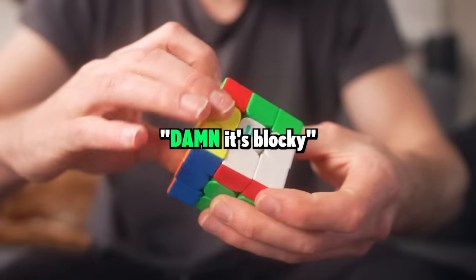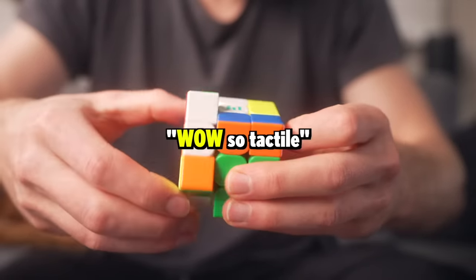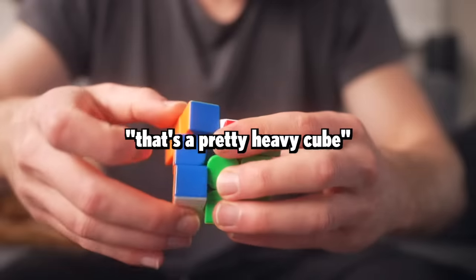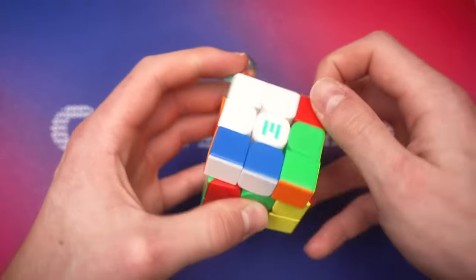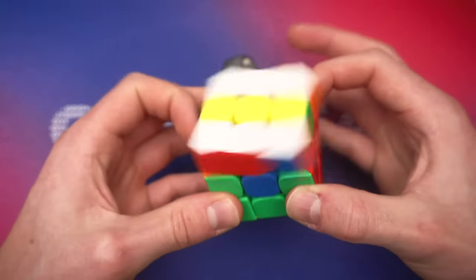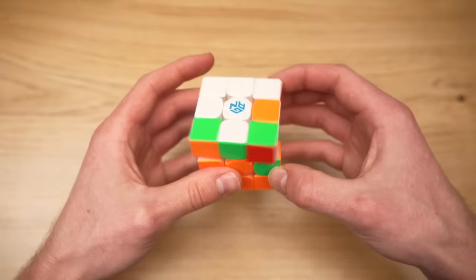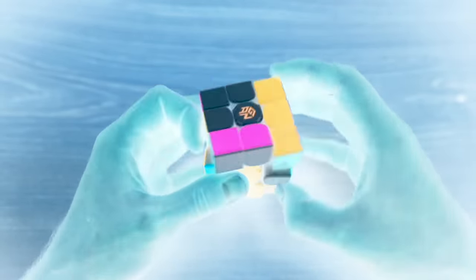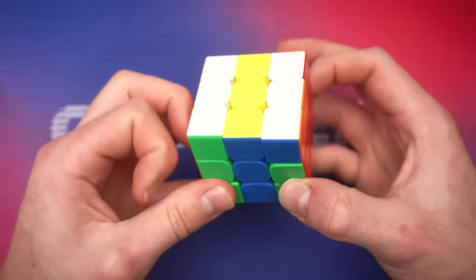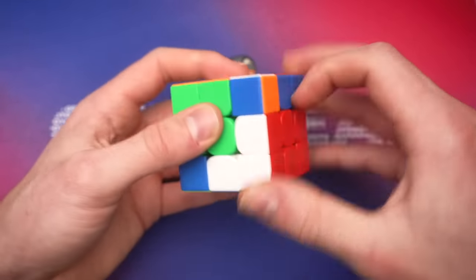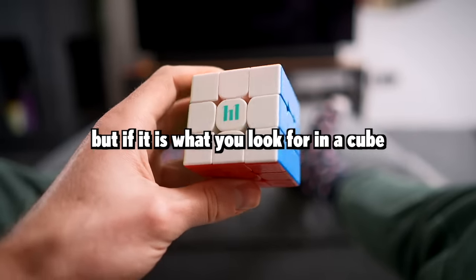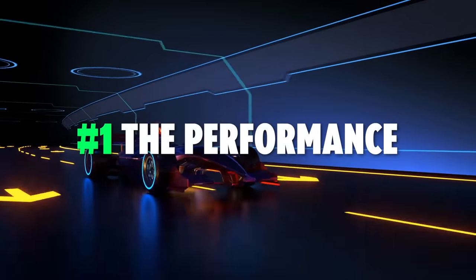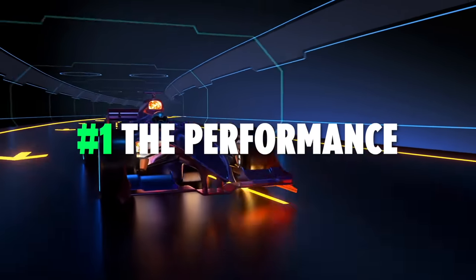Not so long ago, I brought the cube with me to a competition where I let other people try it. And most people said to me, damn, it's blocky. Or, whoa, so tactile. Or, that's a pretty heavy cube. And those are all valid points. The cube is a pretty solid, tactile, blocky cube. It's kind of how like GAN cubes are light, airy, and flexible. Moyu decided to do the opposite. Which means that if you don't like these qualities in a cube, the cube just isn't for you. But if it is what you look for in a cube, well, it is probably the best performing cube on the market right now.